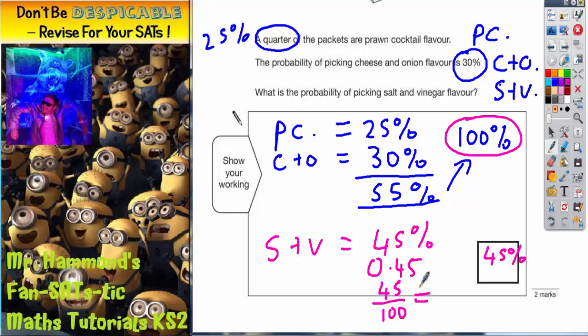There's one other answer you could give: you could simplify this 45 out of 100. If you divide both the numerator and the denominator by 5, 5s into 45 would give 9 and 5s into 100 would give 20. So you could have any of these answers as acceptable.